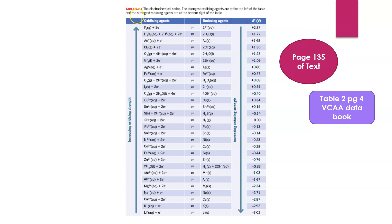The oxidizing agents are on the left hand side of the arrows — everything on the left hand side will be reduced in the forward reaction. Everything on the right hand side are reducing agents, meaning they will be oxidized.